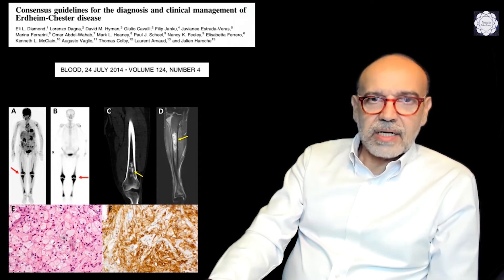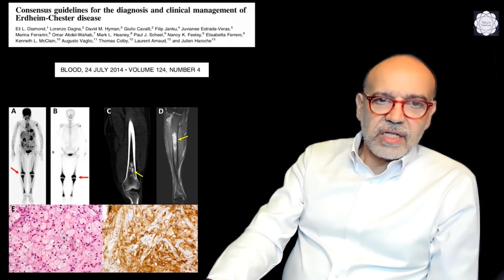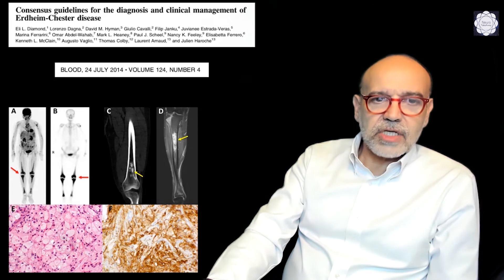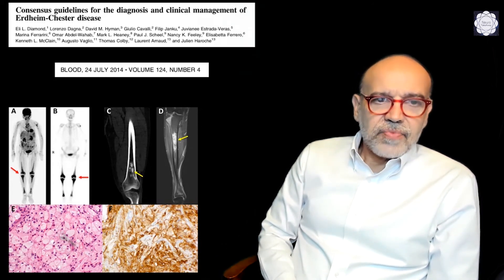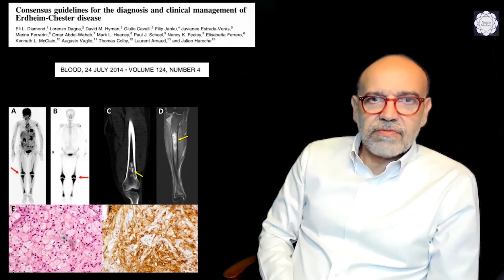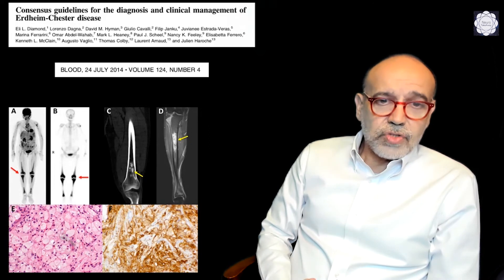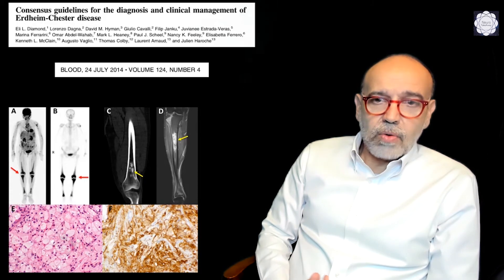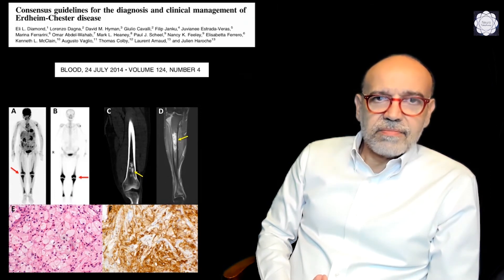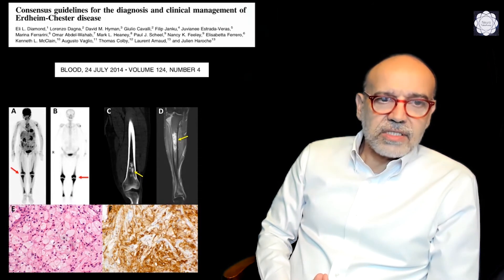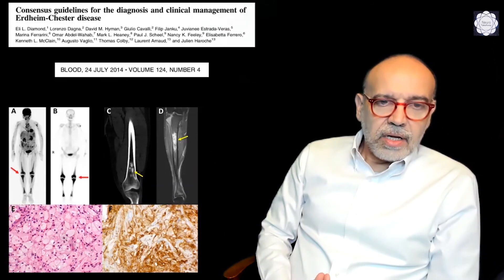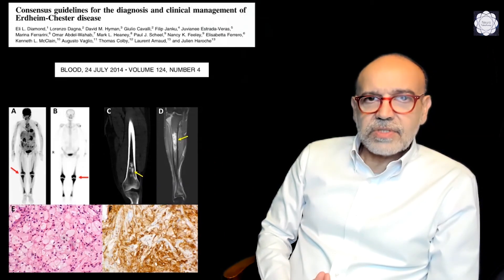The most frequent symptom is pain, especially in the lower limbs, associated with compromise of the bones at the level of the diaphysis and metaphysis of the long bones — particularly the distal femur and proximal and distal tibia and fibula. Radiologically this is associated with osteosclerosis of these bones. Occasionally we can see changes on MRI, but the most sensitive study is FDG-PET, where you can see increased uptake symmetrically at these locations.